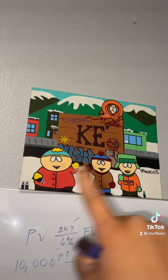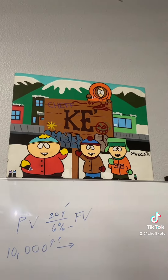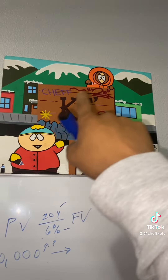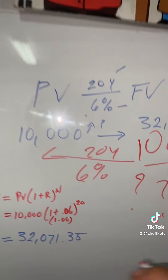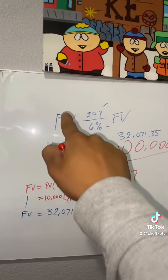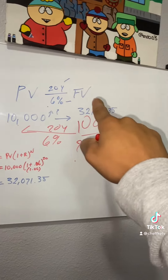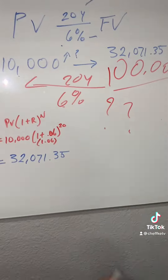Y'all check out my painting real quick — my boy Snub on Instagram sent me a live painting, y'all go check him out. Y'all know I'm from the 210, ChefKeyTV. So what I just showed you guys is how to turn $10,000 as a present value into $32,000 of future value.